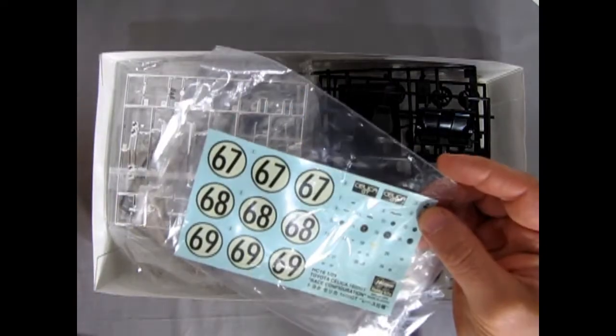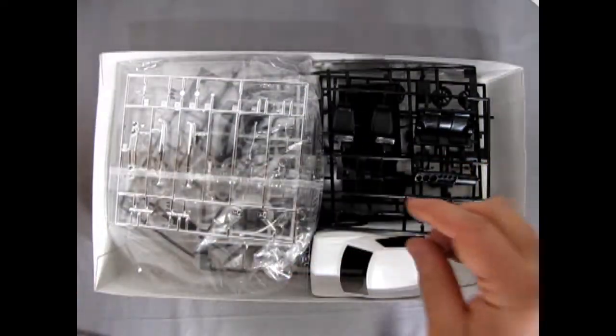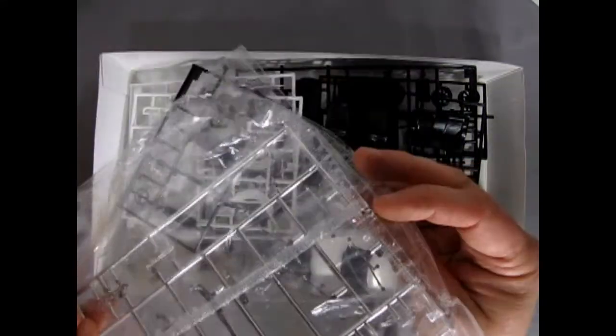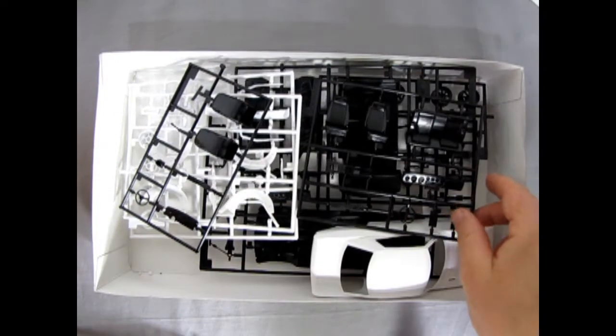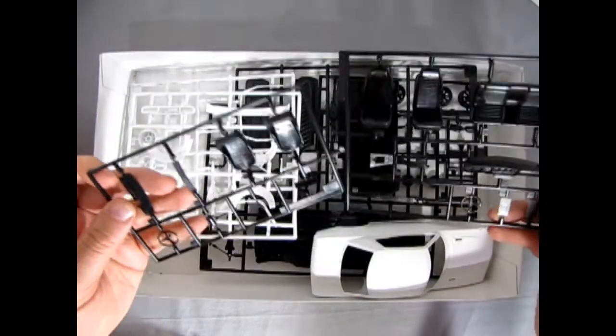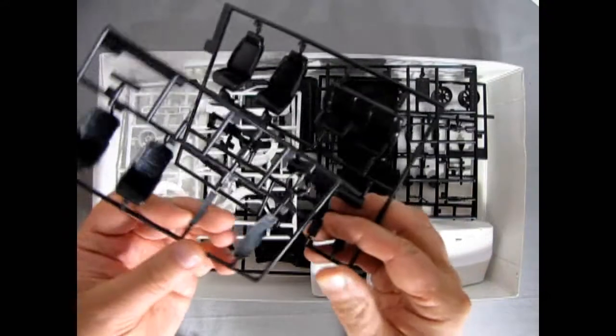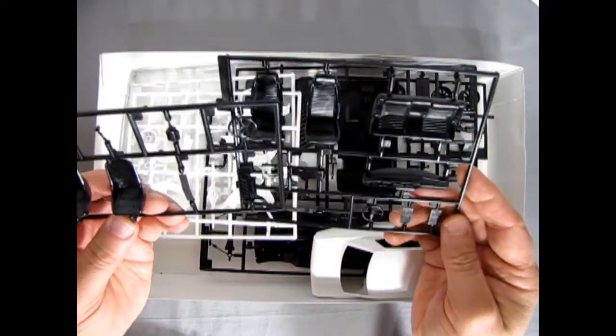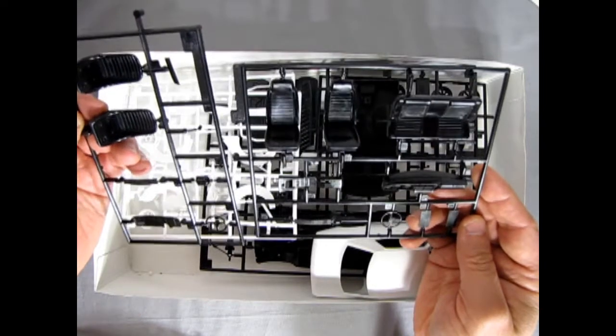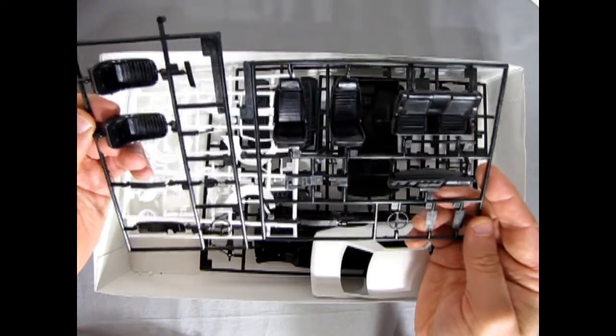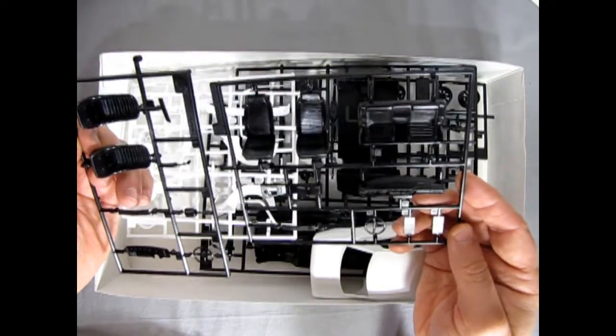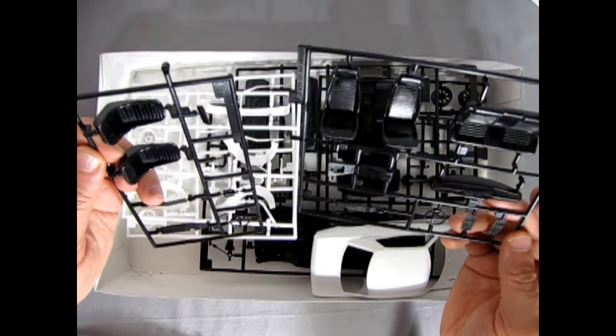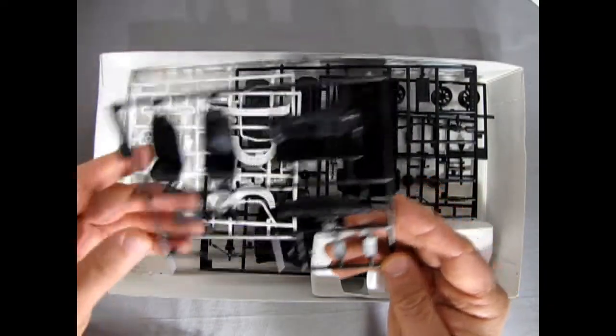There's our decal sheet with a lot of different number options, which is cool. Here's our chrome, my favorite part of all the model kits. Now it's molded in black and white so there's a lot going on. This is quite cool because you can build this as a Japanese car with right-hand drive or the North American version with left-hand drive.